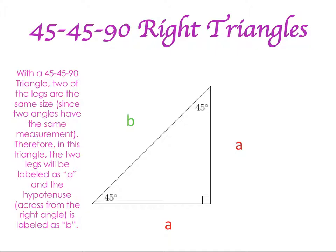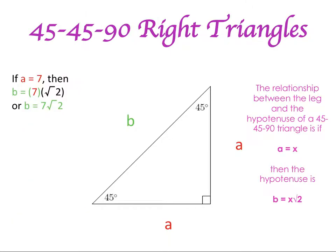Now we're going to take a look at the 45-45-90 right triangle. Again, it's another right triangle, and this is what you would call an isosceles triangle — you have two angles that are the same measurement along with your right angle, so they're both 45-degree angles. The two sides will be the same, so we're going to call them legs. We don't have a short side or a long side because the two have the exact same length — we just refer to it as a leg or the hypotenuse. The hypotenuse will be the longest side and it's opposite of your 90-degree angle. We're going to have a formula: if our leg has a value of X, then our hypotenuse is going to be X times the square root of 2.